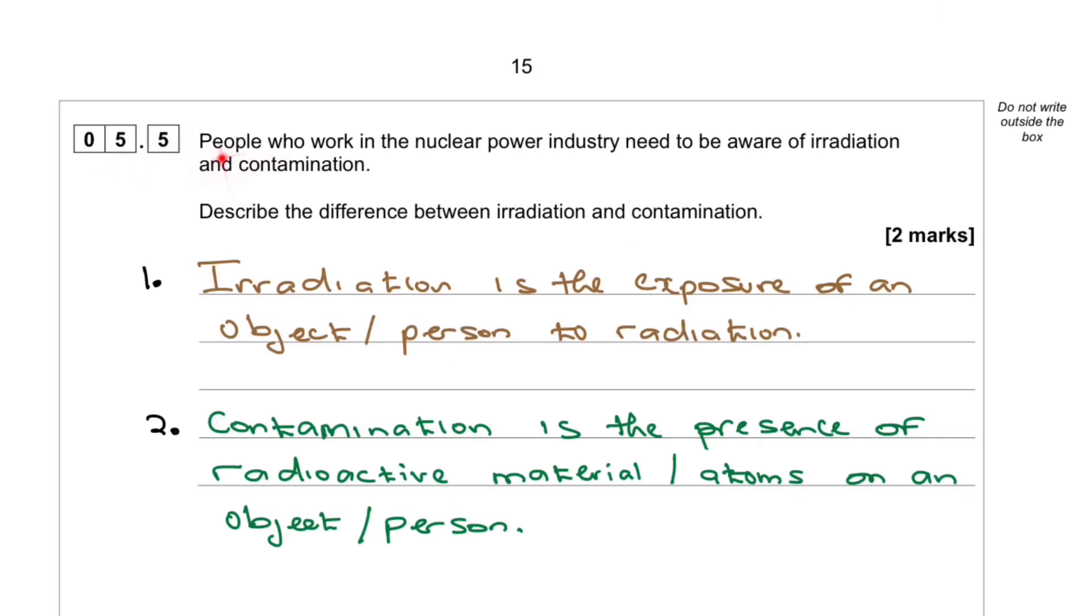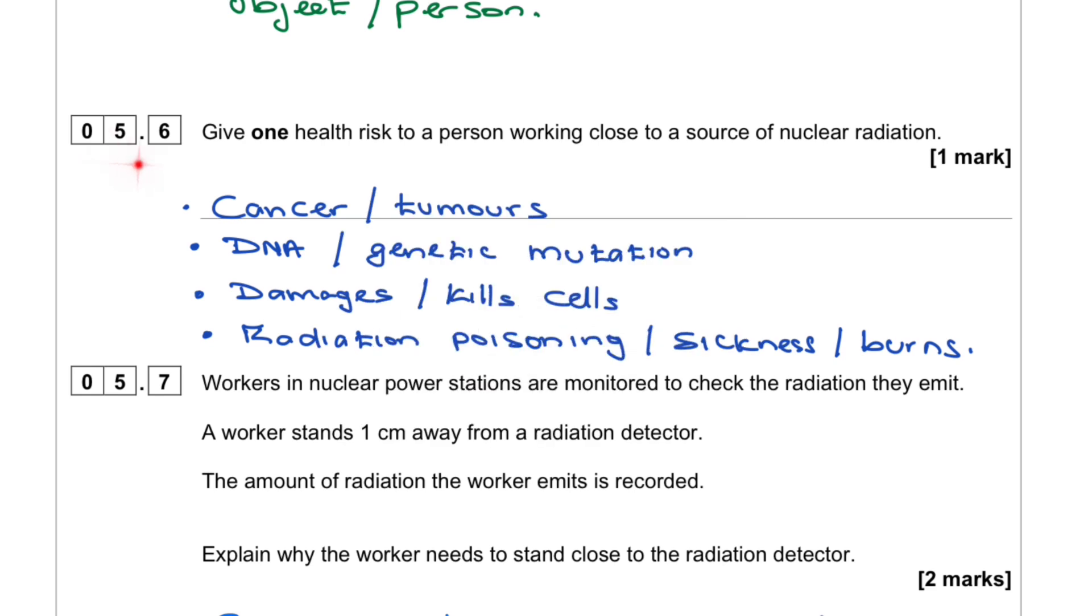Question 5.5. People who work in the nuclear power industry need to be aware of irradiation and contamination. Describe the difference between irradiation and contamination. 1. Irradiation is the exposure of an object or person to radiation. 2. Contamination is the presence of radioactive material or atoms on an object or person.